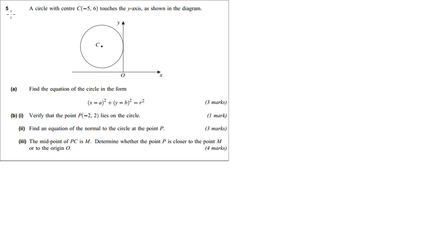Number 5 is a circle question. As we can see from this diagram, we get a point C in the middle which is minus 5, 6. That's the center of our circle, and then we get given this equation that we have to write with A and B and R for us to decide what they are.